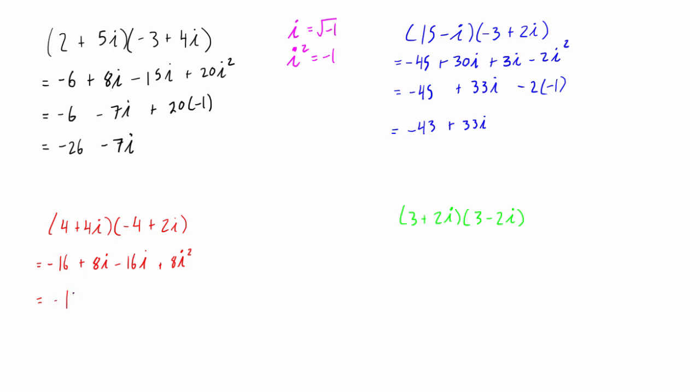Once again, we have negative 16. 8i minus 16i is negative 8i. And then we have plus 8 times negative 1. So really, we have negative 16 minus 8, that gives us negative 24 minus 8i.